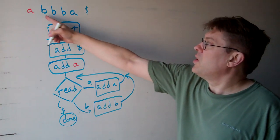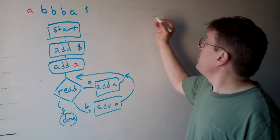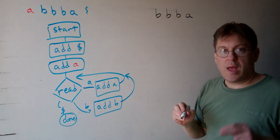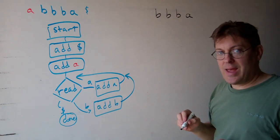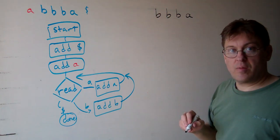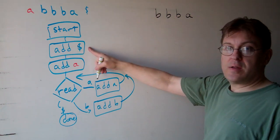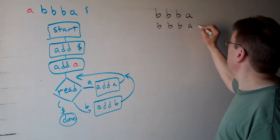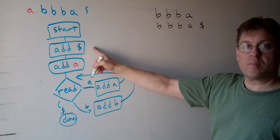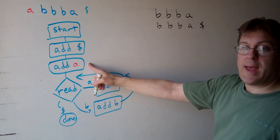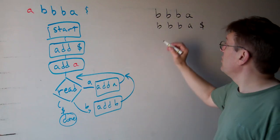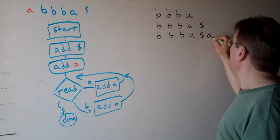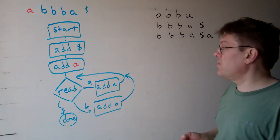We're going to start off with BBBA and we want to append an A at the beginning of the string. So we start, we add a dollar sign. So now we have BBBA dollar sign. We're going to add an A. So now we have BBBA dollar sign A. That's the A we want to have at the beginning of our string.